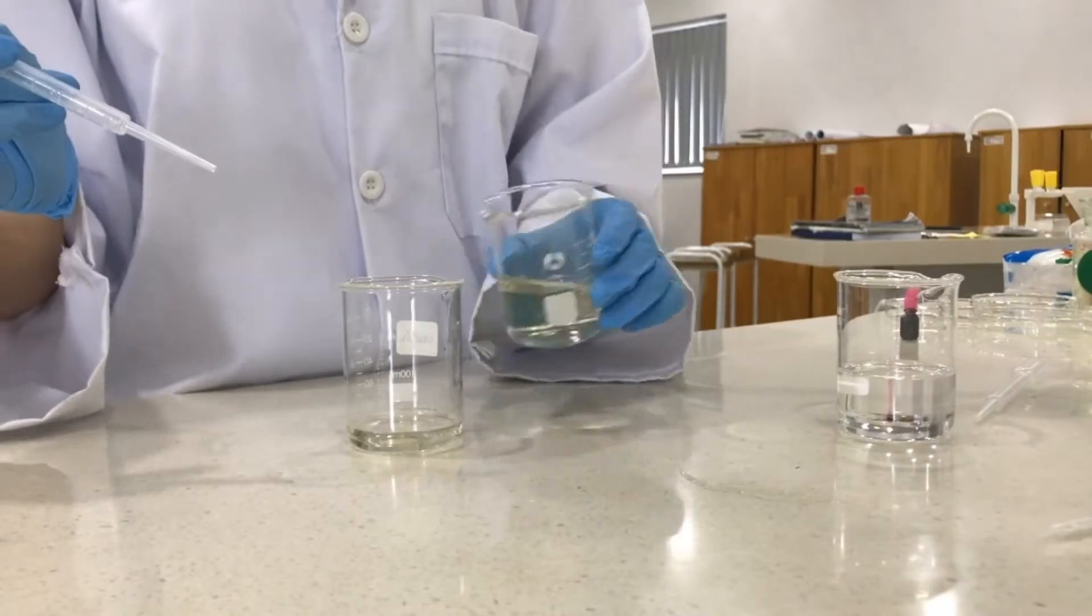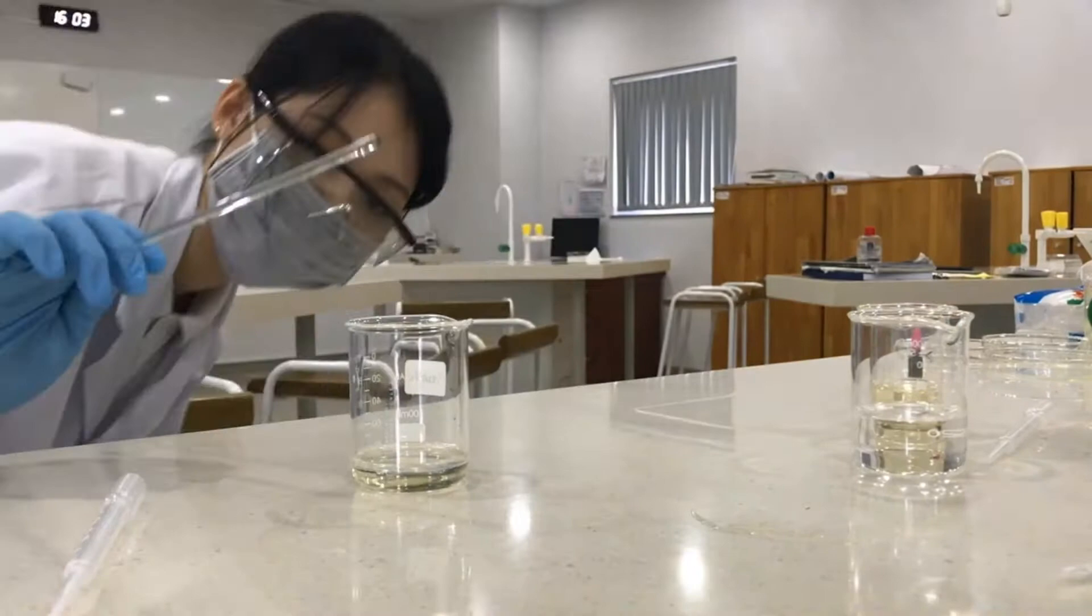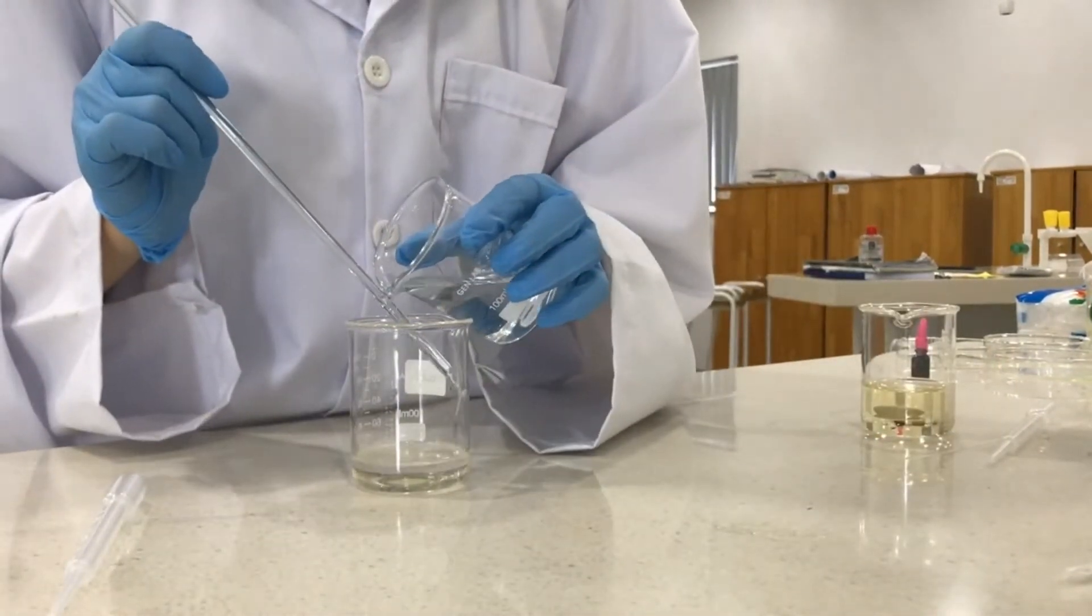Next, pour the aqueous diamine solution and then the cyclohexane solution of acid chloride on top. To minimize mixing of two solutions, pour the second solution down the glass rod.